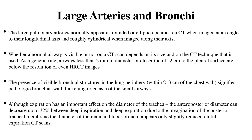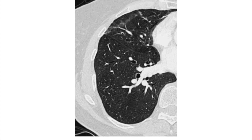Although expiration has an important impact on tracheal diameter, the anterior-posterior diameter can decrease up to 32% between deep inspiration and deep expiration due to invagination of the posterior tracheal membrane. These effects are more reduced in the lower bronchi. On CT, bronchi appear as circular or elliptical when cut perpendicular to the longitudinal axis, and cylindrical if cut along the axis. Similarly, arteries can appear round, elliptical, or cylindrical depending on the axis of imaging.